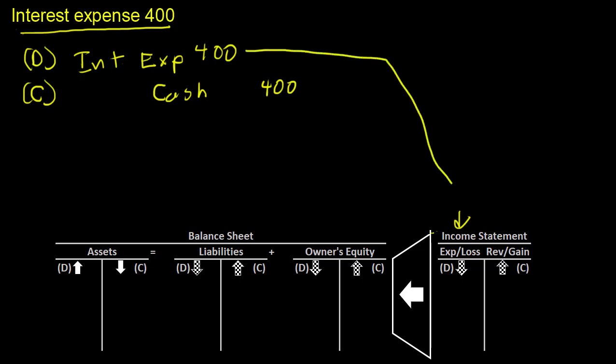So this interest expense is going to hit your income statement and reduce your net income. This credit to cash reduces your assets.